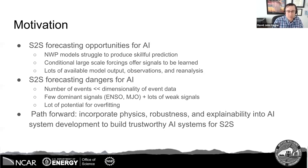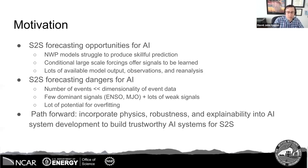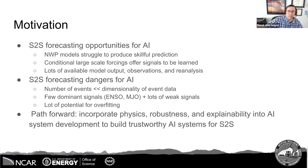So what's the path forward for S2S machine learning forecasting? I'll argue that if we can incorporate physics, robustness, and explainability into the system development, we can build trustworthy AI systems for S2S that are effective and robust and will hopefully provide improved forecasts and understanding.